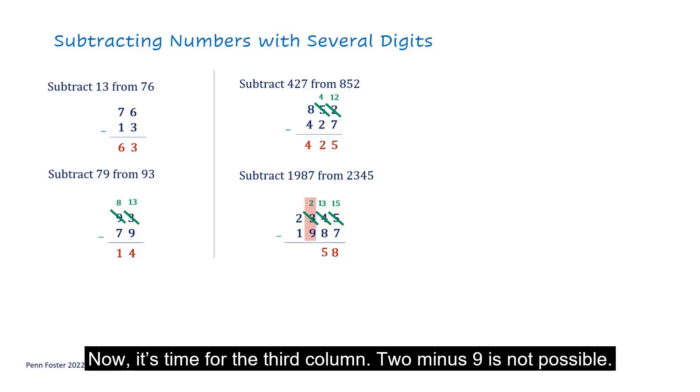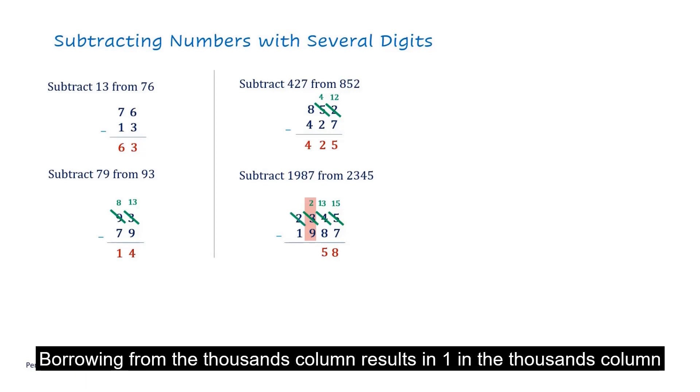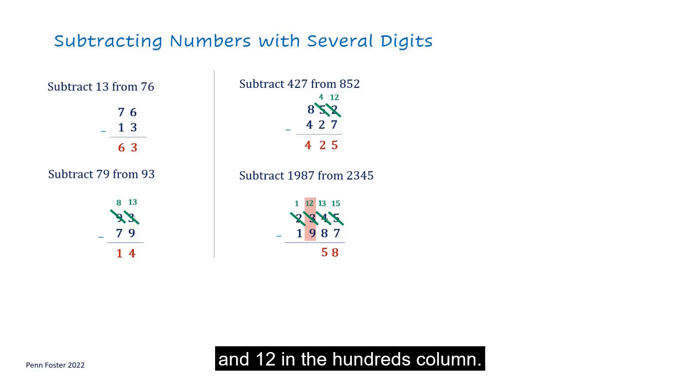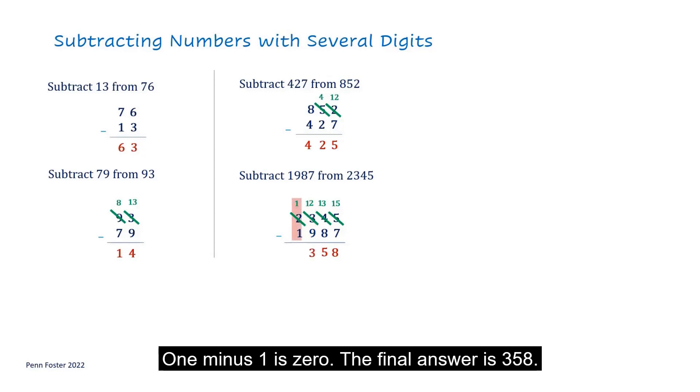Now, it's time for the third column. 2 minus 9 is not possible. Borrowing from the 1 in the 1000's column results in 0 in the 1000's column and 12 in the 100's column. 12 minus 9 is 3. And finally, subtract the last column. 1 minus 1 is 0. The final answer is 358.